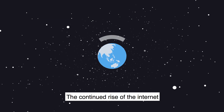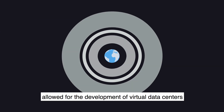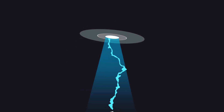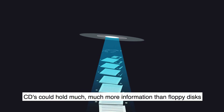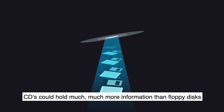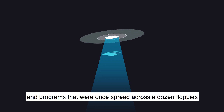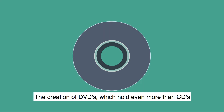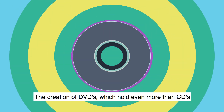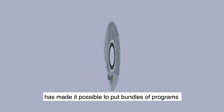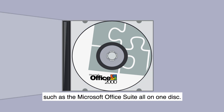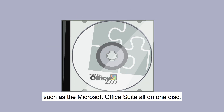The continued rise of the internet allowed for the development of virtual data centers by the end of the decade. CDs could hold much more information than floppy disks, and programs that were once spread across a dozen floppies fit on one CD. The creation of DVDs, which hold even more than CDs, made it possible to put bundles of programs — such as the Microsoft Office suite — all on one disk.